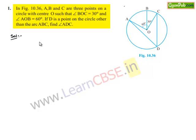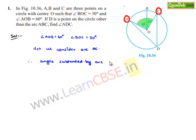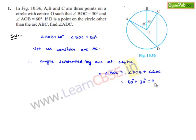Now moving on to the solution. Here it is given that A, B, C are three points on the circle, with angle AOB equal to 60 degrees and angle BOC equal to 30 degrees. Now let us consider arc AC. The angle subtended by arc AC at the center is angle AOC, which is angle AOB plus angle BOC, equal to 60 degrees plus 30 degrees, that is 90 degrees.